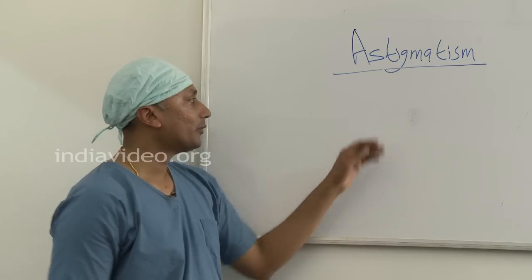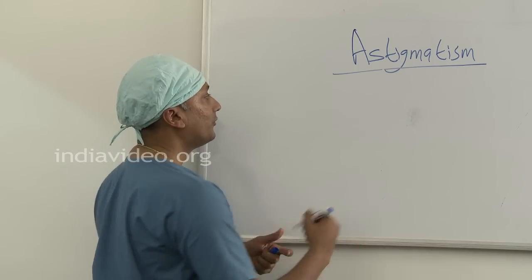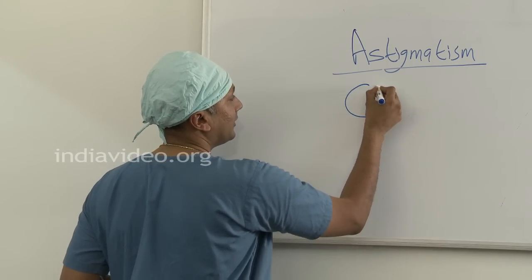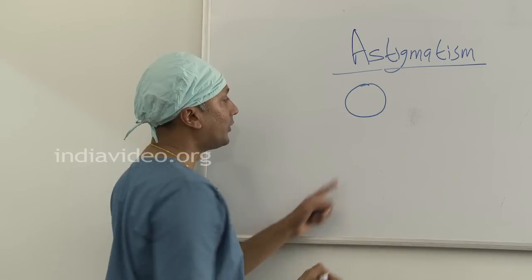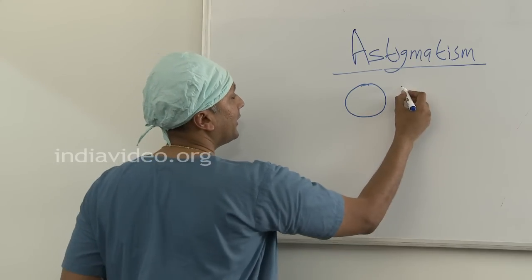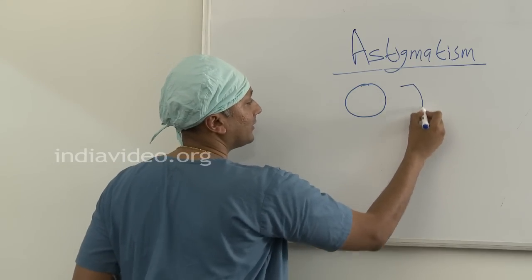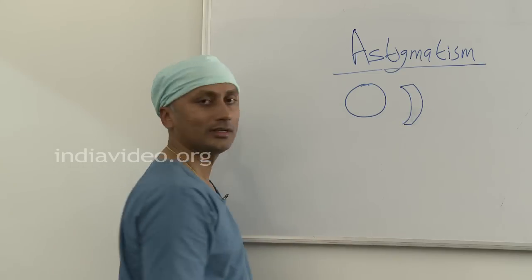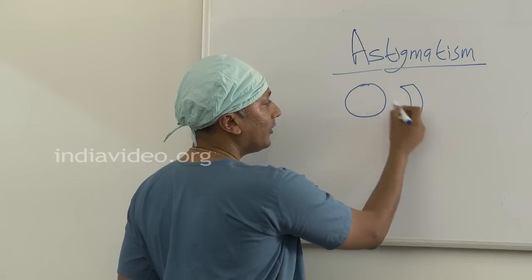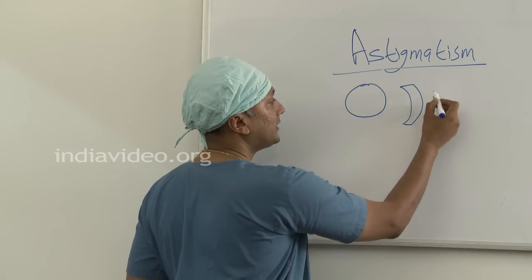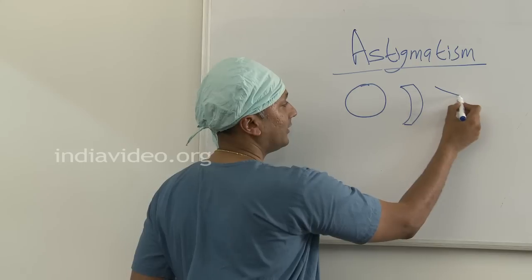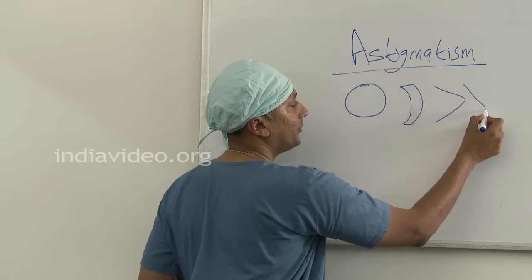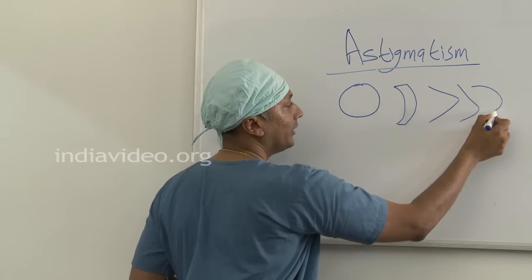In astigmatism, what happens is very interesting. If you take the cornea, the cornea is circular in shape. If you take a cross section, it is a perfect sphere or circle. If there is any alteration in this shape, like the cornea becomes conical, elongated, or oval,